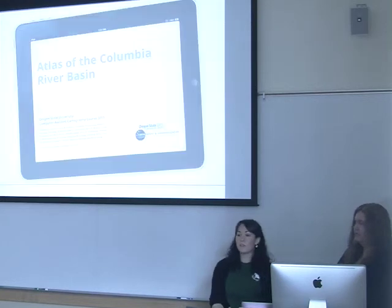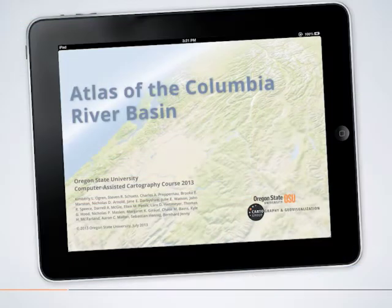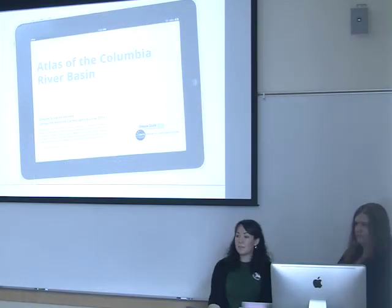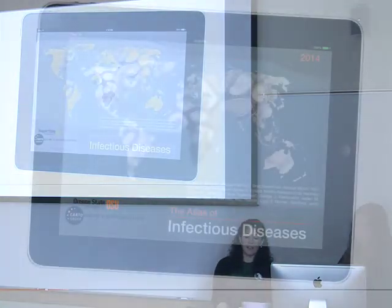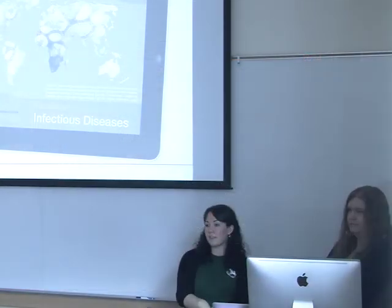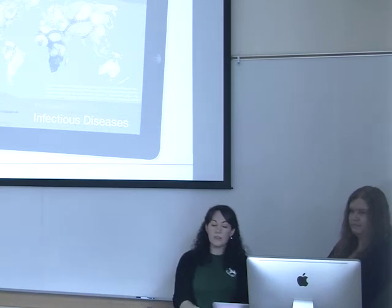The first time we taught this course was in 2013, and the students developed the Atlas of the Columbia River Basin, which was really well received within the cartographic community. In 2014 the students developed the Atlas of Infectious Diseases, which won the British Cartographic Society and National Geographic Society's new map member award, and also won the NASIS Student Dynamic Map Competition's award for best narrative map.